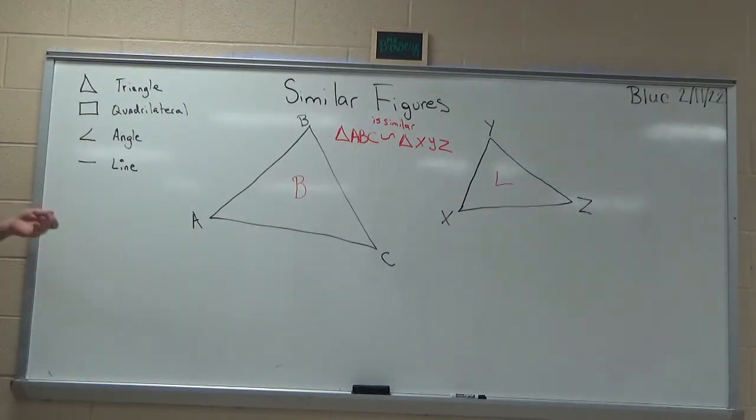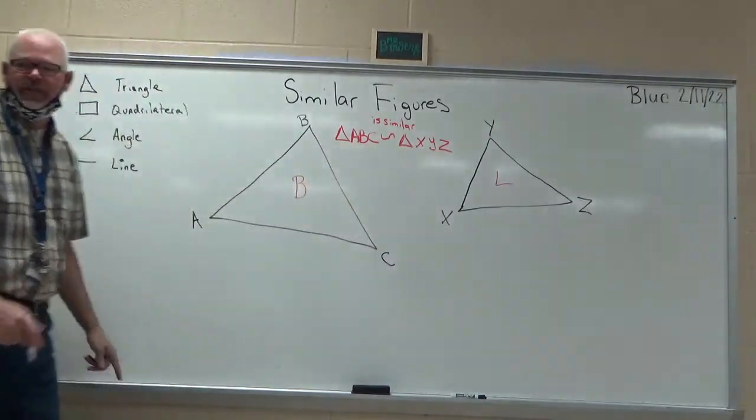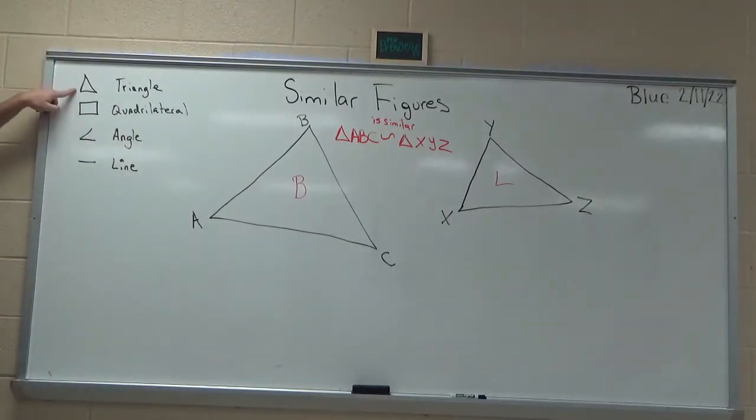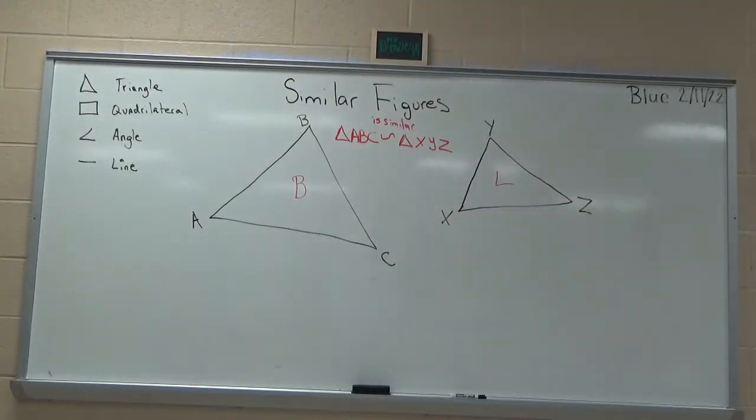That's a sentence, just like we read in your book there. Triangle ABC is similar to triangle XYZ. So this is like a little key. When you see a triangle, you say the word triangle. If I would write another one like this, quadrilateral EFGH. It's just a squiggly line. It is similar to quadrilateral WXYZ. It's just a sentence.